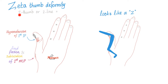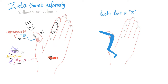Zeta thumb deformity, or Z thumb, or Z-line deformity. Zeta is a Greek letter that looks exactly like this. We have hyperextension of the first IP — IP means interphalangeal; the thumb only has one, unlike every other finger which has PIP and DIP. We also have fixed flexion and subluxation of the first MCP. So it looks exactly like a Z.